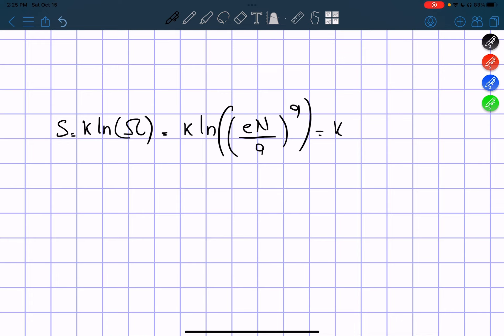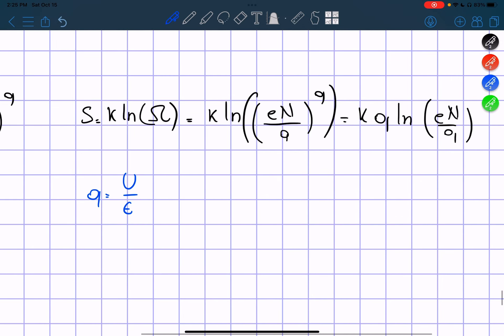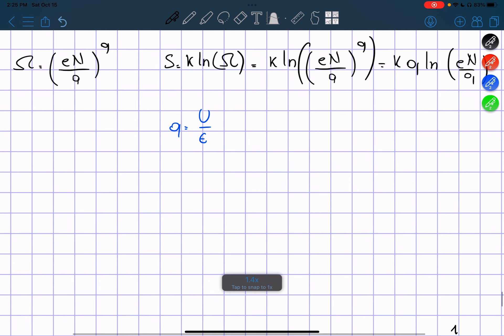So we can rewrite this as K Q ln of E n over Q. Now we know again that Q is equal to U divided by a constant, so we're going to get the entropy is equal to K U over a constant times ln of E n over Q.